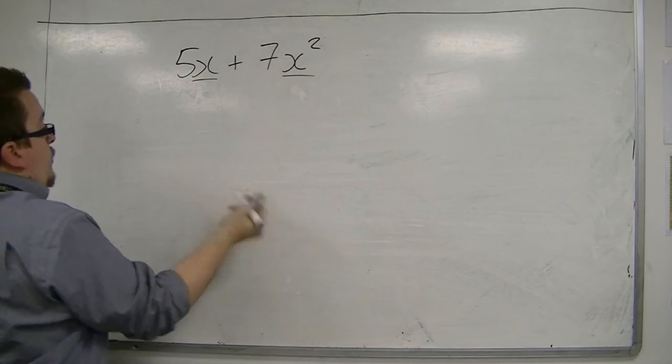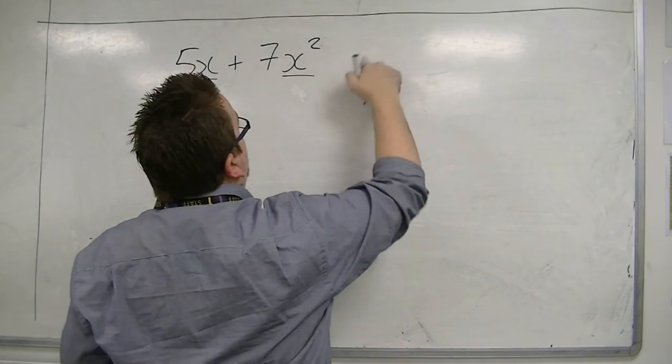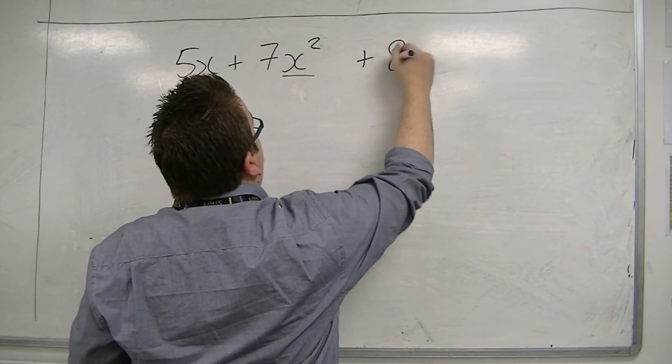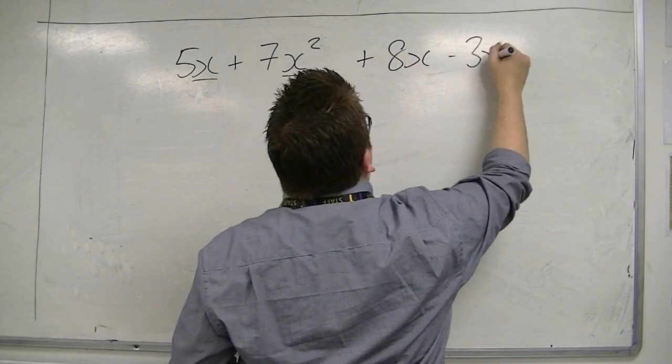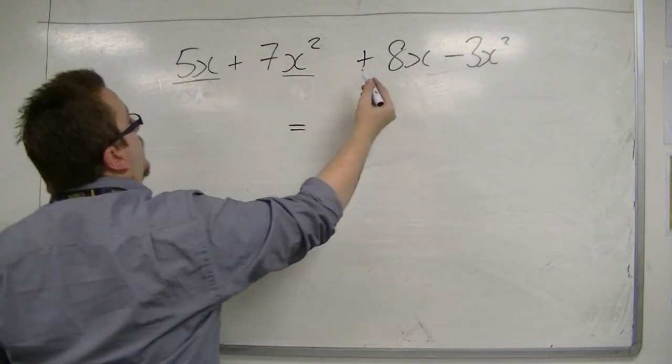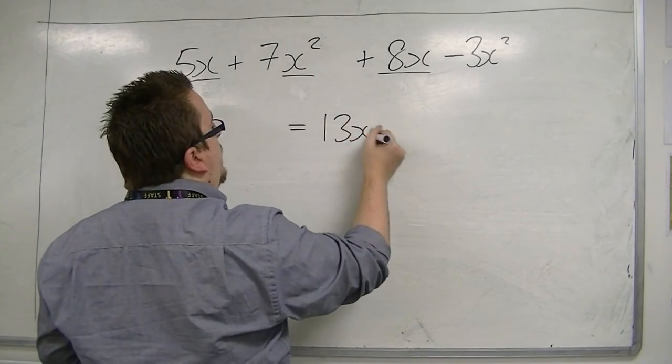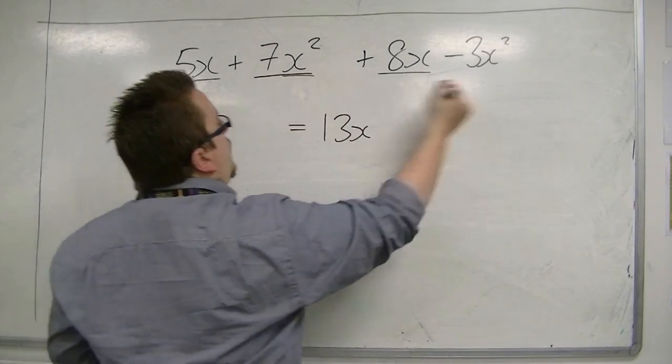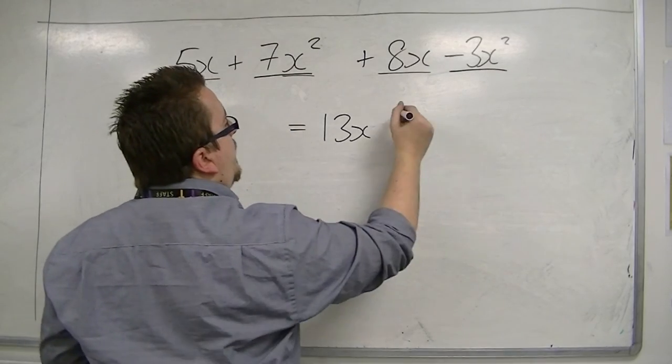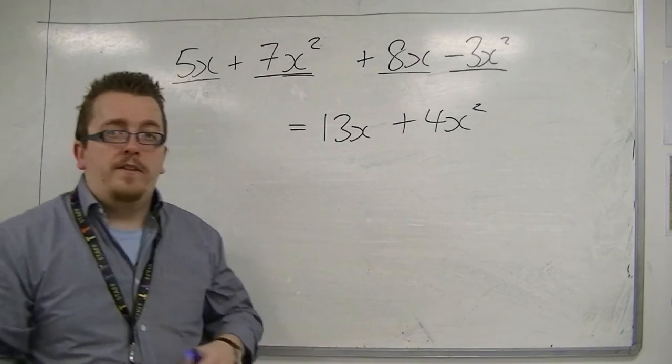So you could potentially have a problem where you have 5x plus 7x squared plus 8x minus 3x squared. So we're going to deal with the x's first. So I've got 5x and 8x. That makes 13x. And then you've got 7x squared, take away 3x squared, is 4x squared. And once again, I cannot combine them any further.